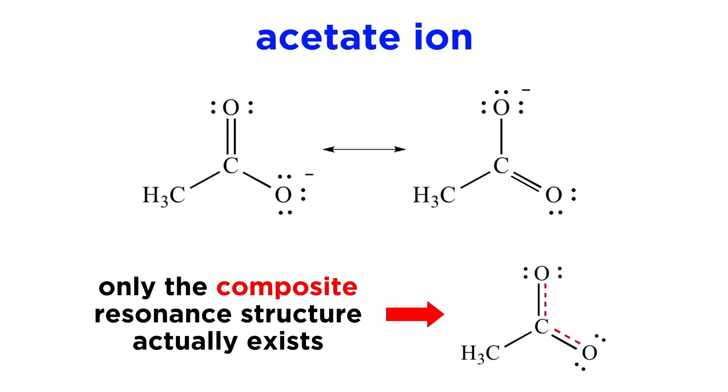We can represent that with this dashed line, and we can think of it almost like half of a pi bond in both positions, resulting in what can be thought of as half of a negative charge on each oxygen, although we typically will represent this as a delocalized negative charge listed up here.